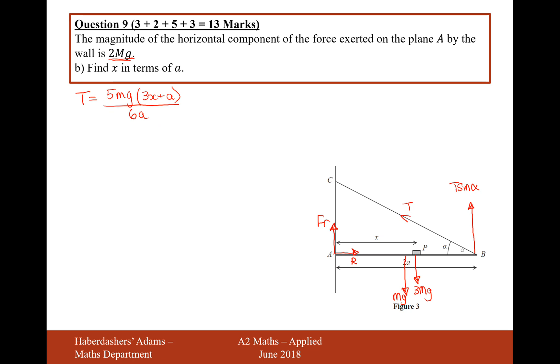Now, given that the tension is equal to this expression here, the tension, so if we resolve that force, and it's going to go that way, that's going to equal T cos alpha. So, work out x in terms of L, I think we'll have to use this information, so it's going to be T cos alpha equals 2 mg. Those are basically the only two horizontal forces on my diagram. The rest of it is vertical. So, it's going to therefore be 5 mg times 3x plus L over 6L times by cos alpha, which is 4 fifths, equals 2 mg.